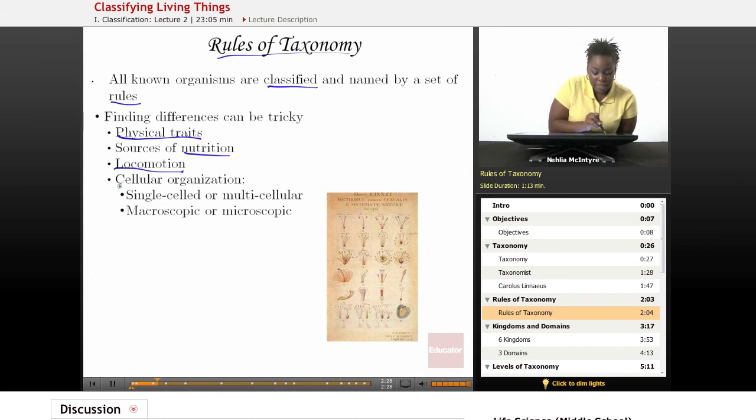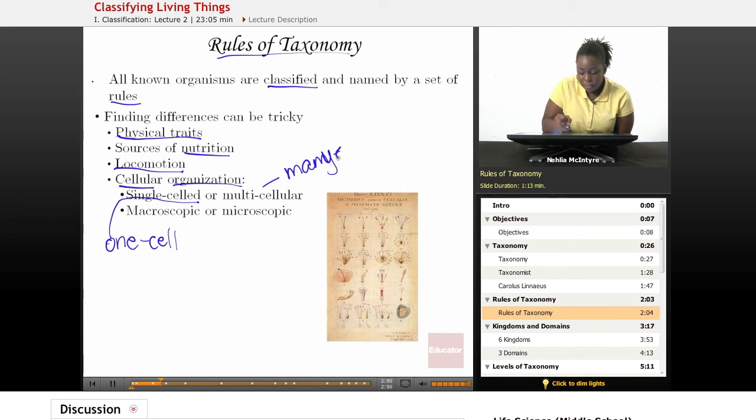They can also be classified by cellular organization. All living things are made of cells. If that organism is single-celled, meaning it's only made of one cell, or if that organism is multicellular, meaning it's made of many cells, that's another way to classify organisms.